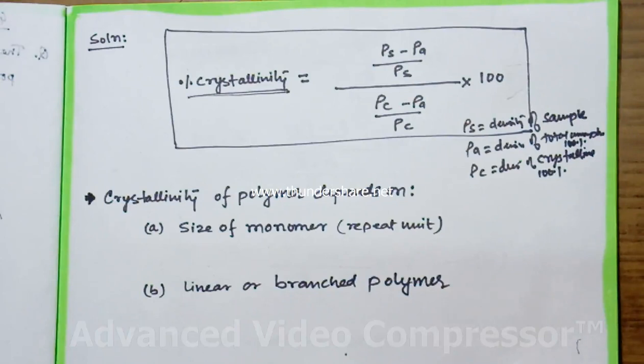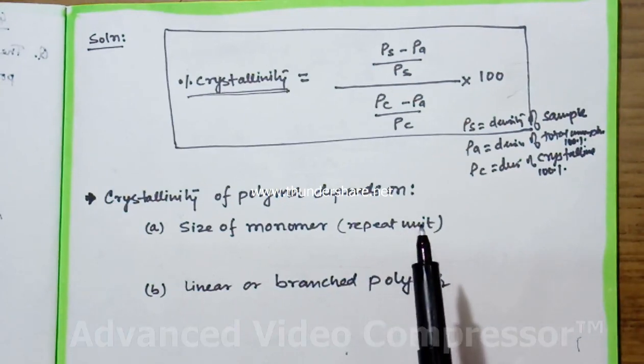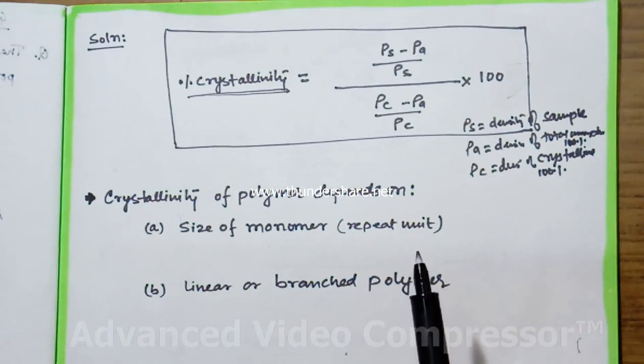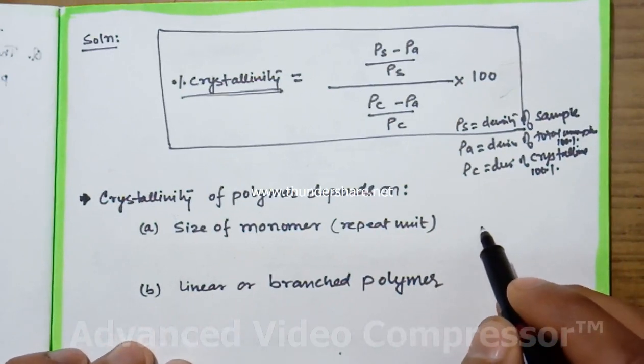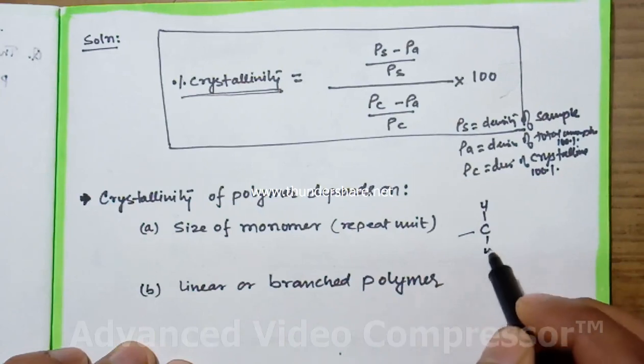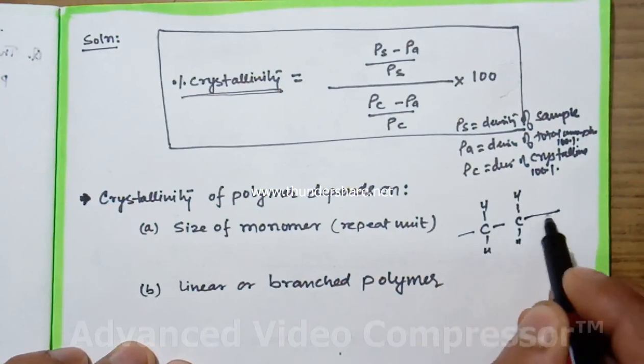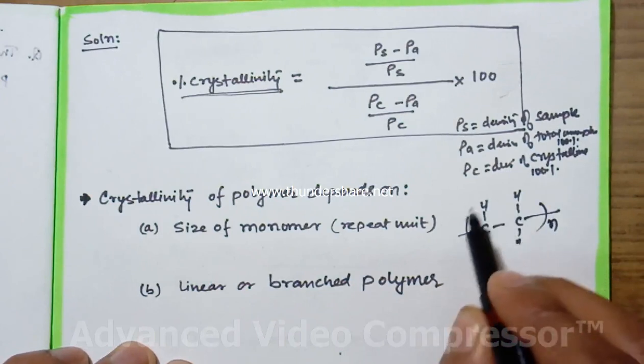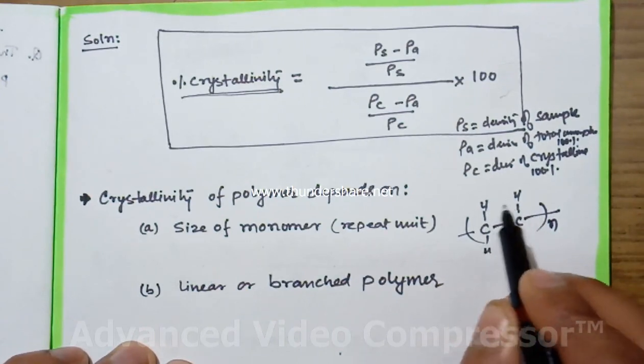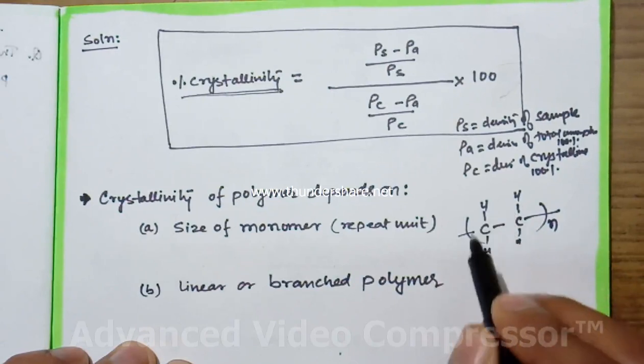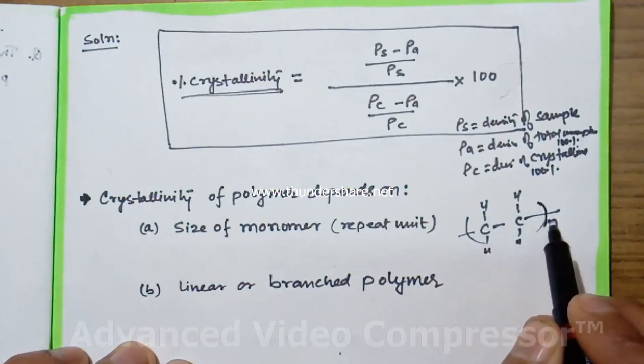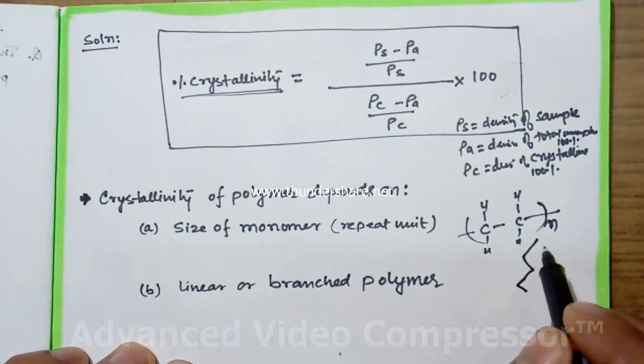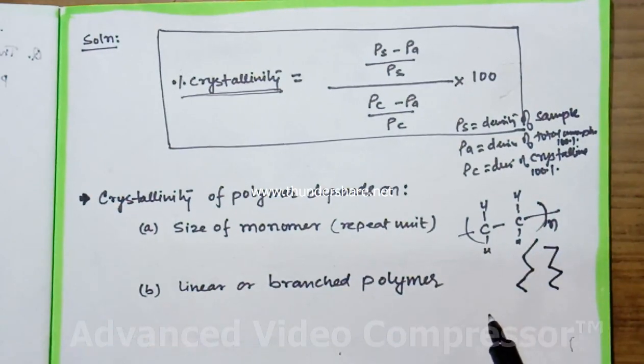Now crystallinity is somewhat related with crystallinity of metal. In polymer, suppose we take polyethylene: C, H, H, C, H, H. These are the repeating units. In case of polymer we have more number of atoms as a repeating unit. This basically forms a chain structure like this.